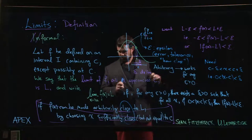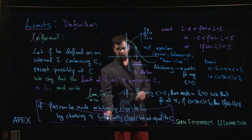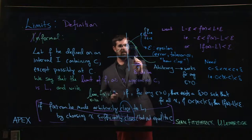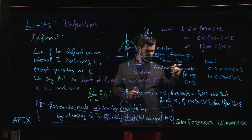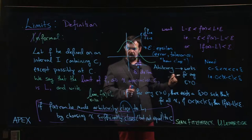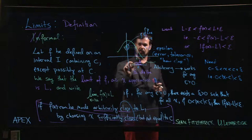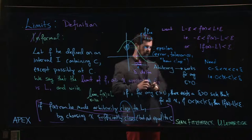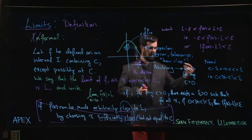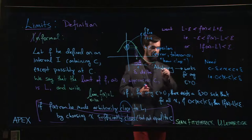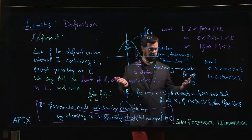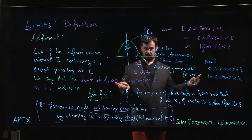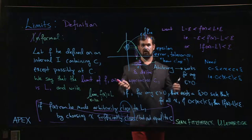It looks intimidating the first time you see it, but all it's doing is making precise these notions of closeness from the informal definition. If you want your y value to be in this range around L, you need to choose x values in the corresponding range around c. As long as you can always do that — no matter how small you shrink the epsilon interval, you can always find a corresponding delta interval — the limit exists and equals L. Epsilon is not specified because we want arbitrariness; given any epsilon, you must show you can find a delta. We'll show how that works in the next few examples.